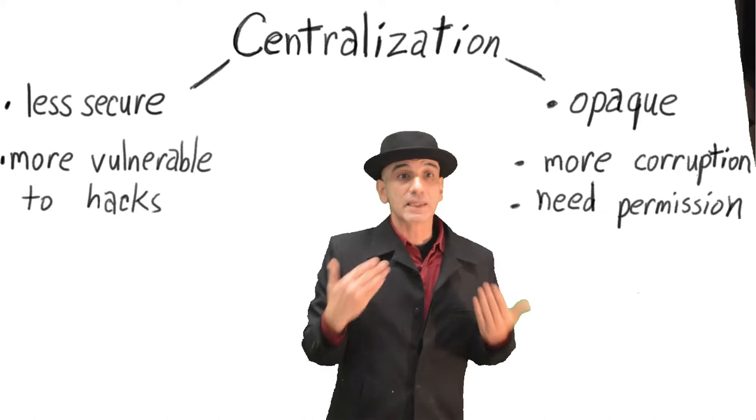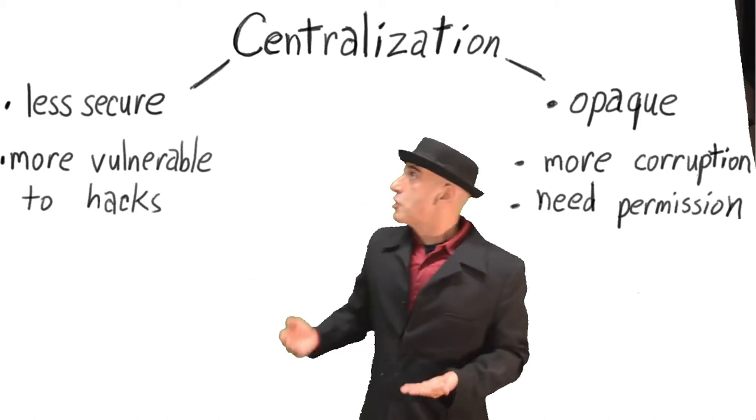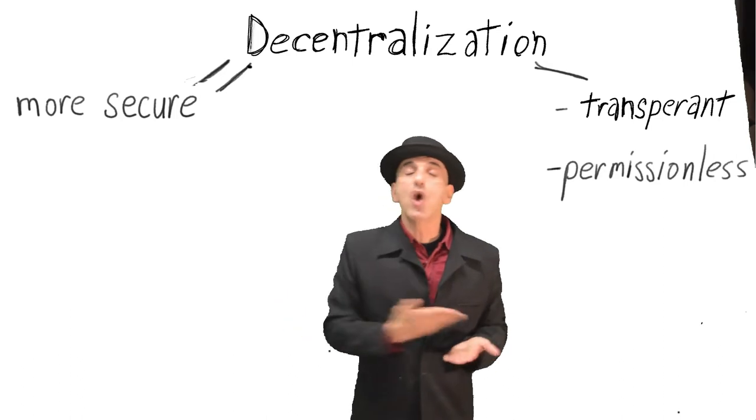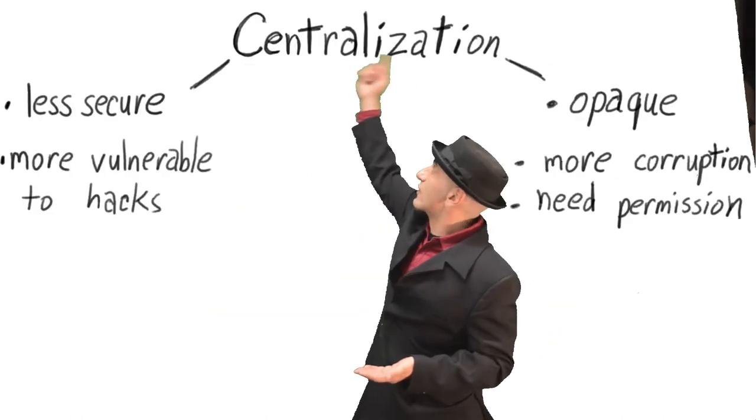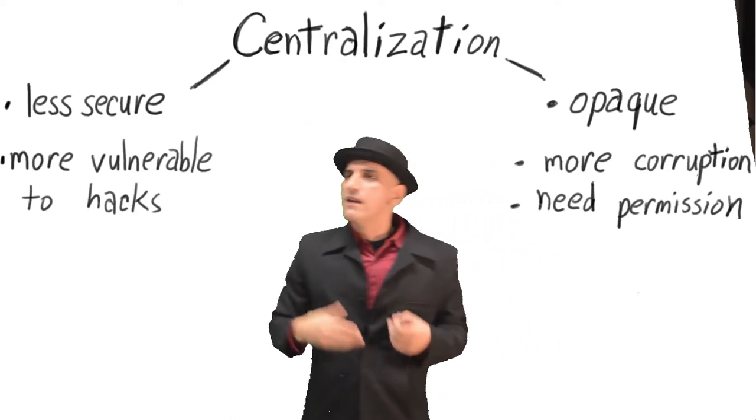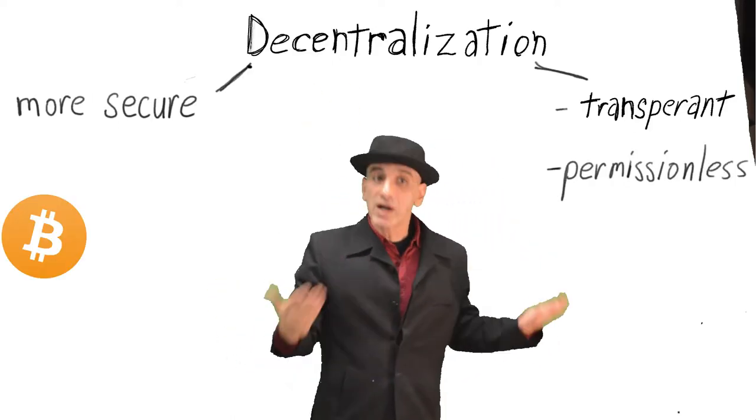Another thing is transparency. We all have a copy of the book. We know what's in it. No one can cheat. But somebody here at the center that controls the data could cheat. And that's important for money.